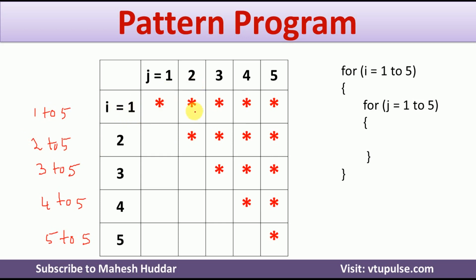j will become 2, 2 is greater than or equal to 1 — yes, star will be printed. 3, 4, and 5 are all greater than or equal to 1, so star is printed. In the next iteration when i becomes 2, j will become 1 first, but 1 is not greater than 2, so star will not be printed — we print space here. When j becomes 2, 2 is greater than or equal to 2, so star will be printed and all remaining stars will be printed. So we can write a very simple condition: if j is greater than or equal to i, we print star; in all other cases, we print space.